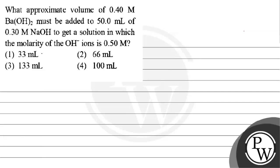Let's read this question. The question is: what approximate volume of 0.40 molar barium hydroxide must be added to 50 ml of 0.30 molar NaOH to get a solution in which the molarity of hydroxide ions is 0.50 molar? Option 1 is 33 ml. Option 2 is 66 ml. Option 3 is 133 ml. Option 4 is 100 ml.